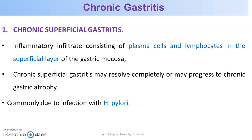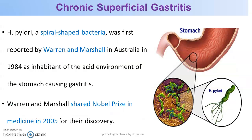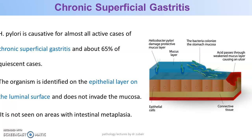Chronic superficial gastritis comprises plasma cells and lymphocytes in the superficial layer of the gastric mucosa; it may resolve completely or progress to gastric atrophy, commonly due to H. pylori. H. pylori is a spiral-shaped bacteria first reported by Warren and Marshall in Australia in 1984 as inhabitants of the acid environment of the stomach causing gastritis; they shared the Nobel Prize in 2005. It is causative for almost all active cases of chronic superficial gastritis and 65% of quiescent cases. The organism is identified on the epithelial layer of the luminal surface and does not invade the mucosa, and is not seen in areas with intestinal metaplasia.